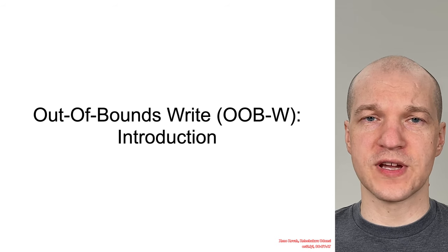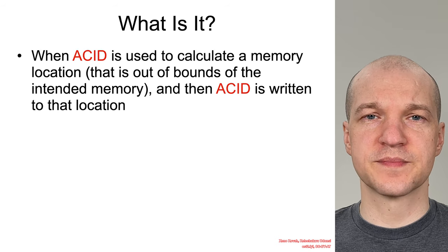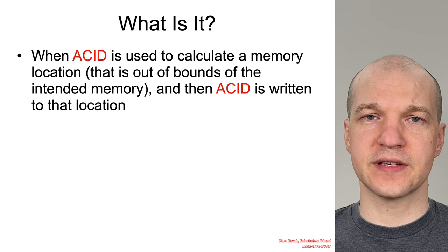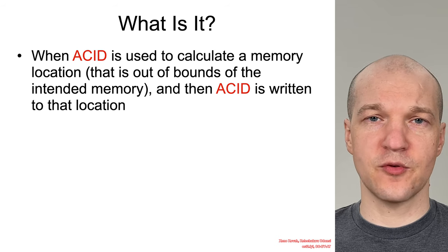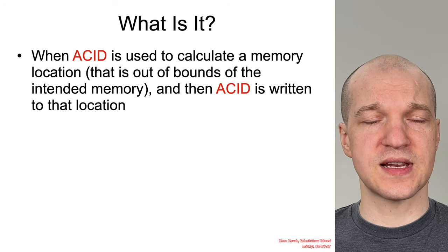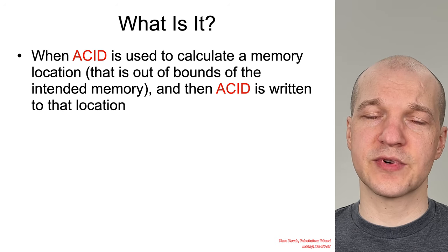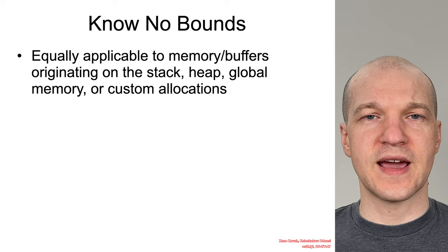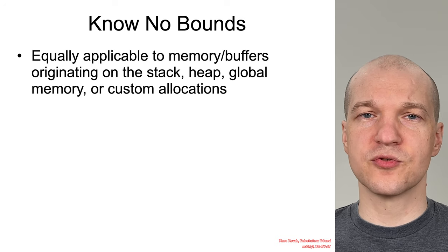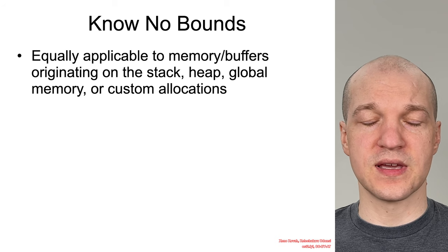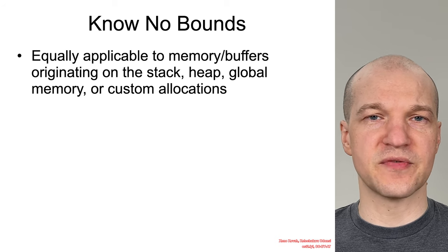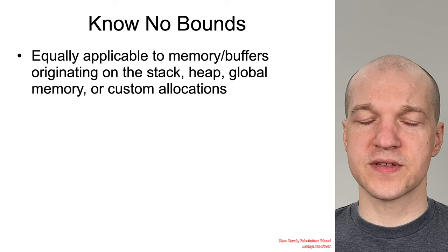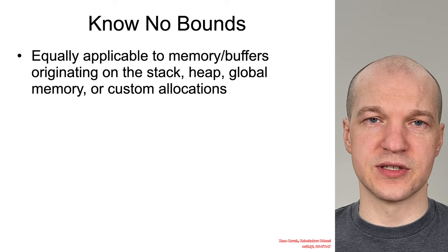Now let's talk about out-of-bound write vulnerabilities. What is it? It's when attacker-controlled data is used to calculate a pointer to some memory which is out-of-bounds of the intended location, and subsequently attacker-controlled data is written to that memory location. This is equally applicable whether you're thinking about the intended memory locations as buffers on the stack, heap, global memory, or whether there's something like a custom allocation done through some API.